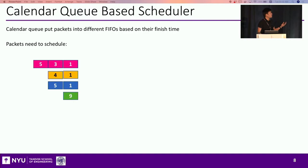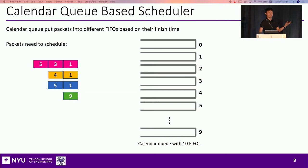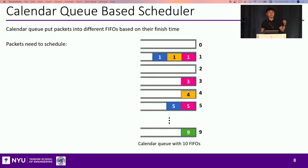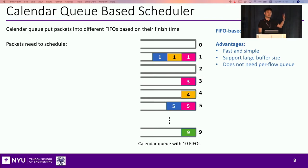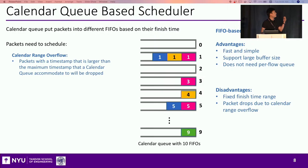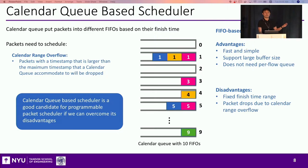According to recent papers, academia finds the calendar queue to be a good candidate for this job. The calendar queue refers to a number of strict priority queues, each assigned with a specific rank or rank range. A packet simply enqueues into the FIFO associated with its rank. The advantage is easy to find — it's fast and simple, just FIFO enqueue, and it can support a rather large buffer size. However, the disadvantage is also obvious: since we only have a limited number of FIFOs and each covers a certain rank range, there is a maximum rank the calendar queue can accommodate. If packets have a rank larger than this maximum, they cause calendar range overflow and will be dropped.